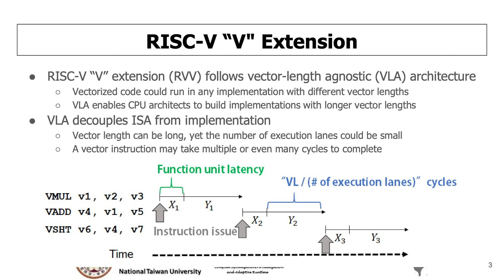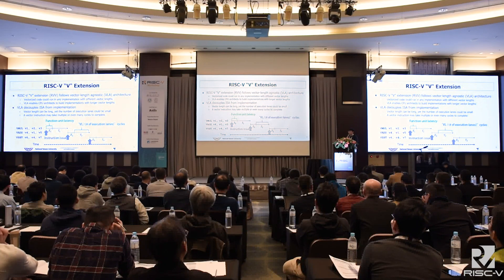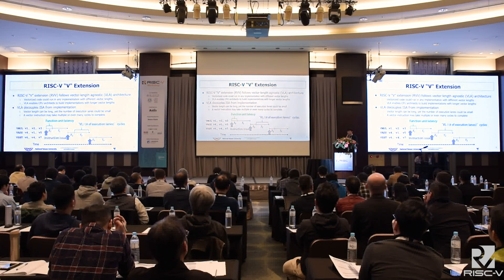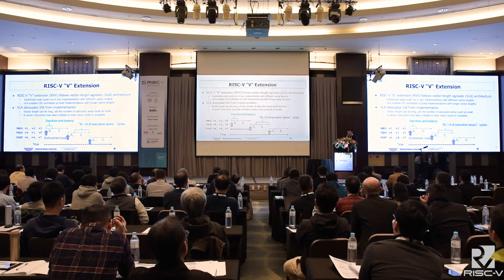Not like X86 SSE and AVX, when they want to change the vector register size, they publish a new vector ISA. And we can also see there is a recent trend towards a longer vector register size. Like Intel offers the AVX-512 and the ARM SVE whose register size can be up to 2048 bits. So with the VLA architecture, our vector length can be long yet the number of execution lanes could be small.